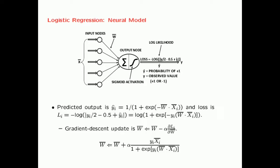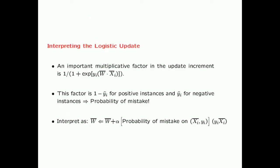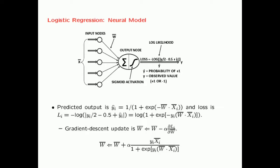As with all the models, we can apply standard gradient descent. Taking the gradient of the loss function with respect to the weight vector gives the update shown at the bottom of the slide, where alpha is the learning rate. There is an important multiplicative factor in the update increment: 1 divided by (1 plus exp(Y_i * W · X_i)), which appears in the denominator.